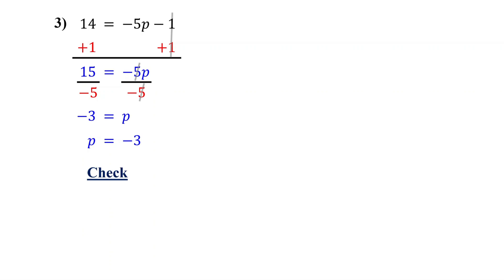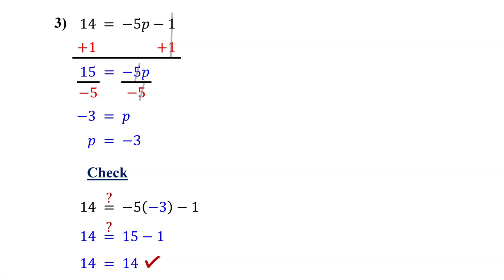To make sure it checks out, plug in negative 3 for p in the original equation and simplify. On the right, negative 5 times negative 3 is positive 15, and 15 minus 1 is 14. It checks out. Go ahead and give this one a try.